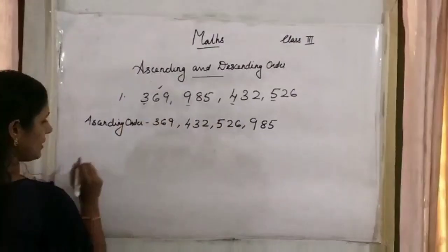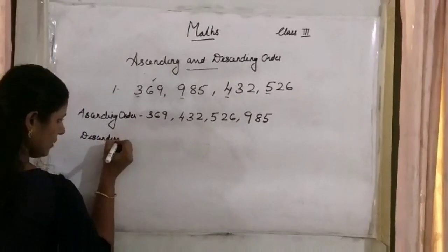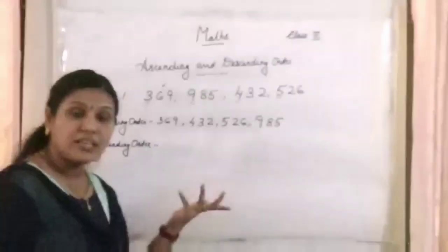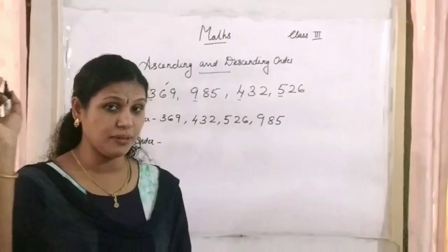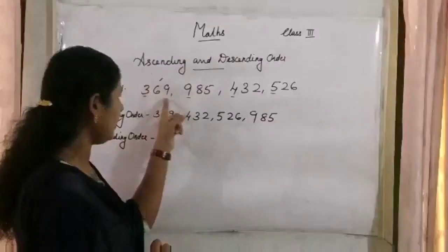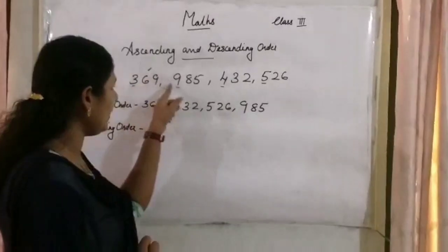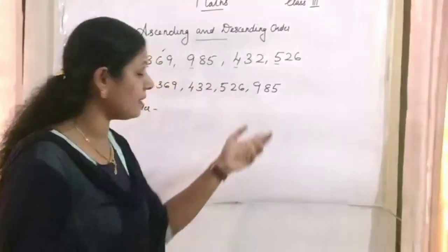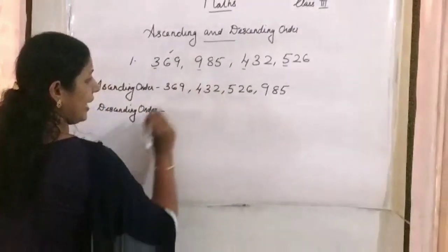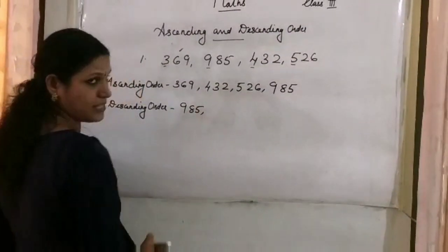Now we are going to write these numbers in descending order. Descending order means writing numbers from the biggest number to the smallest number. So here, which is the bigger one? We look at the hundreds place: 3, 9, 4, 5. Which has the highest value? 9. So 985 is in the first place.